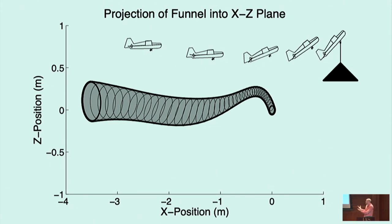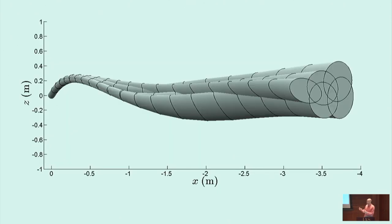The certificates we got out were these invariant set type certificates where we used sums of squares optimization. If we started in some set of state space, we would stay inside despite the uncertainty in our model, and we could accumulate many of those certificates into a bigger certificate covering all of state space. We had a pretty strong argument about robustness. We did experiments in the wind, all kinds of experiments. This was a very strong story for control in my mind.